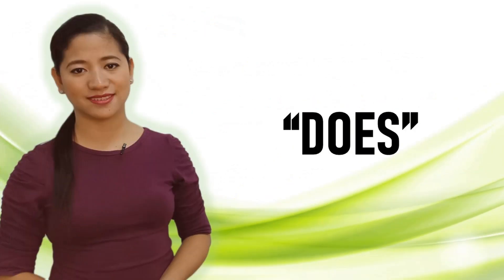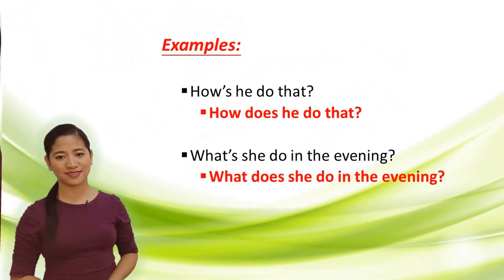Contraction: 'does'. Examples — How's he do that? It means how does he do that? What's she do in the evening? — What does she do in the evening?